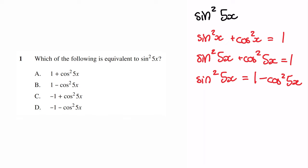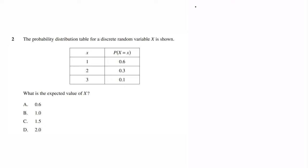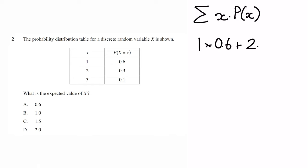For the second question, the probability distribution table shows a discrete random variable x. The expected value is always the sum of x times P(x). All we have to do is multiply each x value by its probability and sum them up, which equals 1.5. Therefore our answer is C.